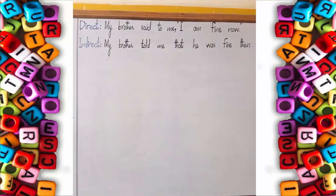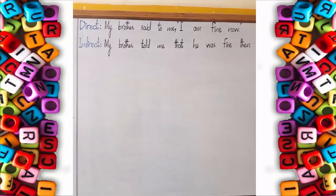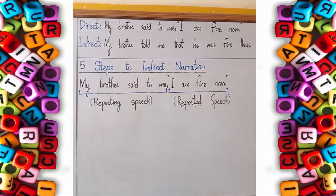Let's understand the process of converting a direct sentence into an indirect sentence. I have slightly modified the example sentence: 'My brother said to me, I am fine now.' The indirect sentence of this is: 'My brother told me that he was fine then.' I am going to tell you what changes we have made and how we converted this. You must concentrate and focus on my instructions, my lecture, and the board.